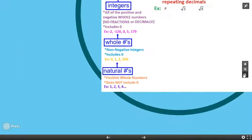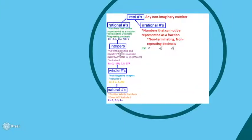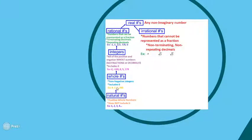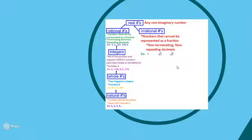A natural number is a whole number because it has no decimals, it's also an integer for the same reason, and it's not negative. It's rational because it can be represented as a fraction, and it's also a real number. So a natural number is a whole number, an integer, a rational number, and a real number. Just follow the flow chart upward to see all the categories each type of number falls into. These are all the categories of real numbers.